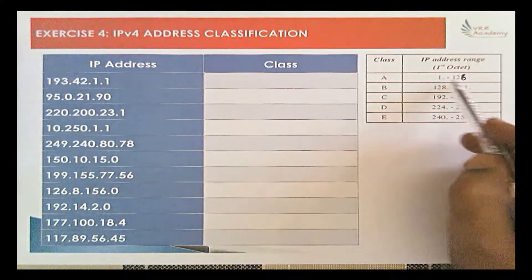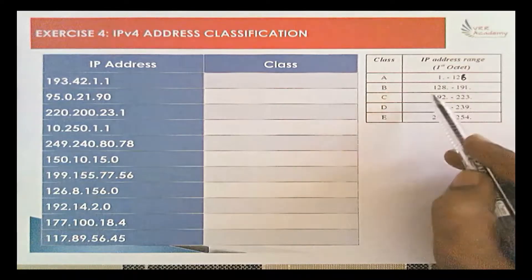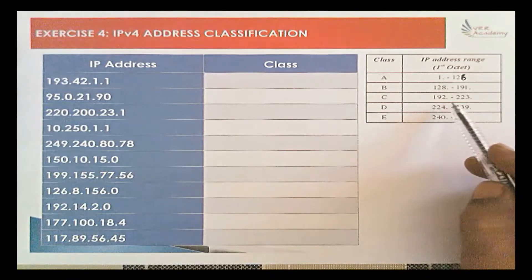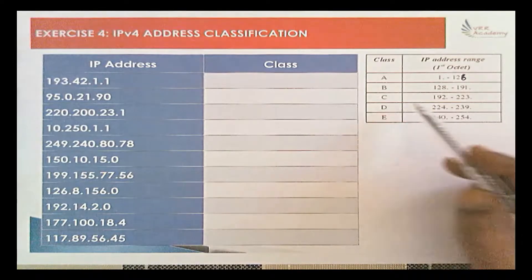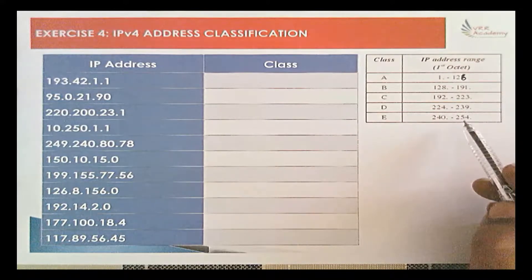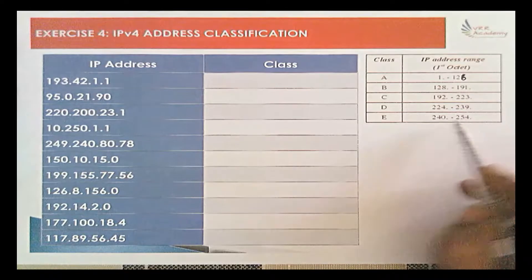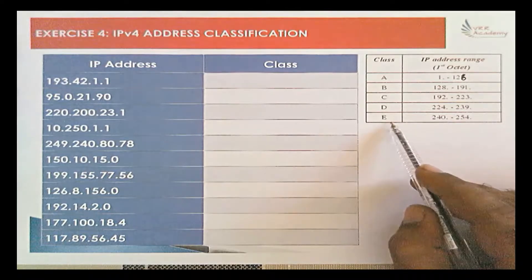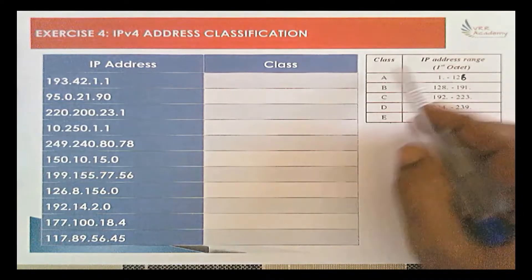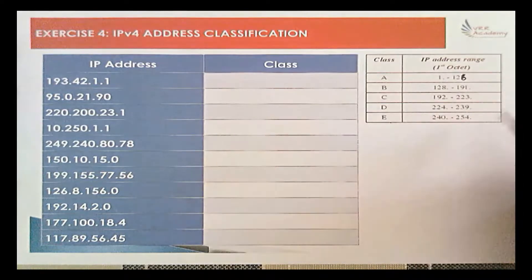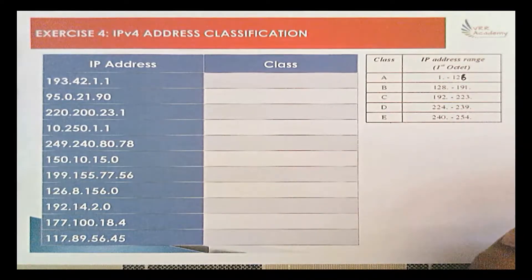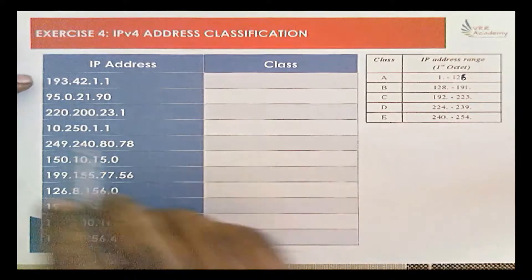The ranges are: 1 to 126 is Class A, 128 to 191 is Class B, 192 to 223 is Class C, 224 to 239 is Class D, and 240 to 254 is Class E. Note that 255 is not included because it is reserved for broadcast. These are the ranges you have to keep in mind as a student.